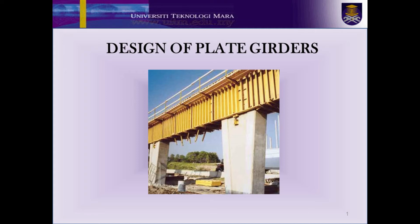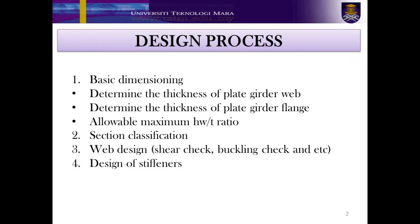Welcome back students, let's proceed. In this lecture, the clauses related to plate girder design will be explained. In general, there are four main steps in designing a plate girder. As you can see here, the first is basic dimensioning, in which you are required to propose the sizes of the plate girder web and flanges, then check whether the proposed section is within the allowable limit or not. Second is section classification. The third is web design. And the last part is design stiffness. In the next slides, we will look at the clauses related to the plate girder design.